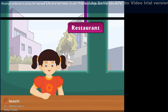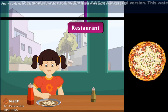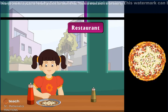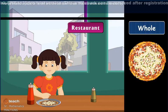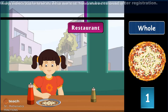Ananya ordered a pizza for herself and she sat down to eat. This is a whole. It is denoted by one.